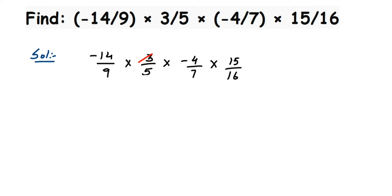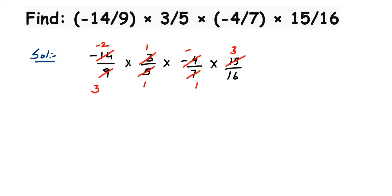Let's cancel the numbers. 14 and 7 cancel — 7 twos are 14, so we get minus 2. Then 9 and 3 cancel — 3 threes are 9, so 9 becomes 1 and 3 becomes 1. Next, 5 and 15 cancel — 5 threes are 15, giving 3 in the numerator. Then minus 4 and 16 cancel — 4 fours are 16, leaving minus 1 in the numerator.